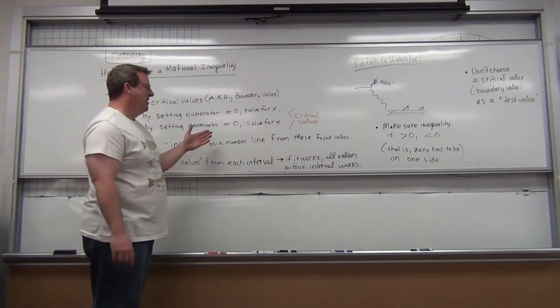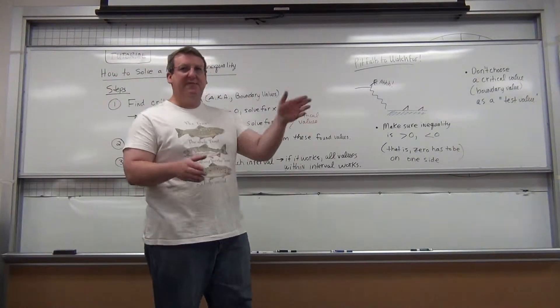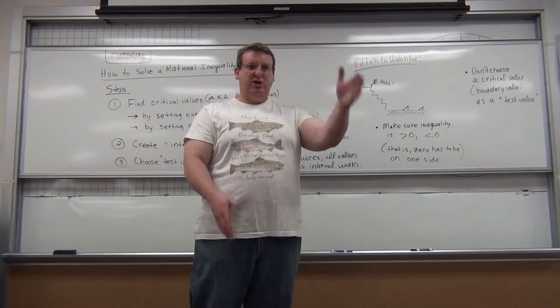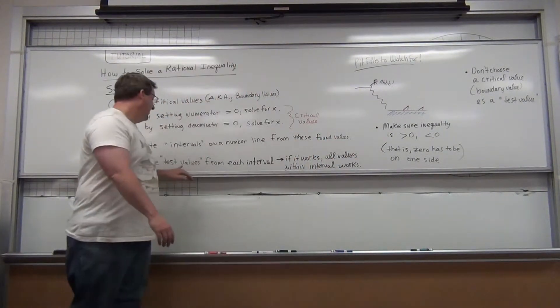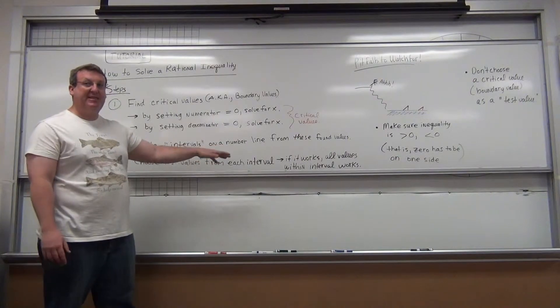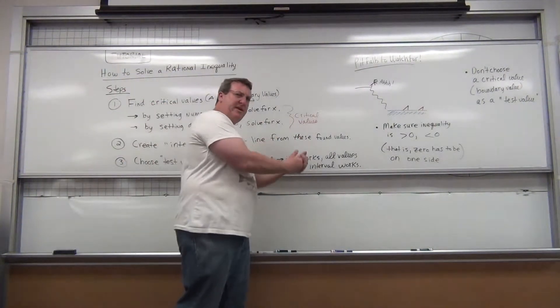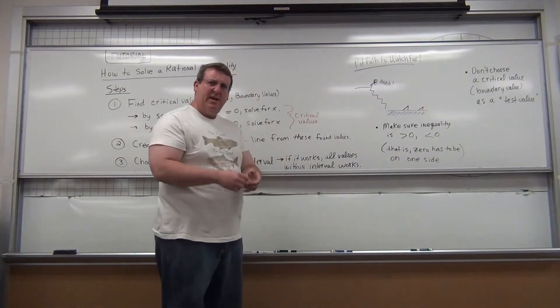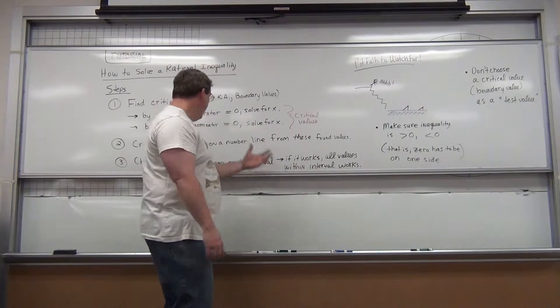Create intervals on a number line from these critical values. So once you identify the critical values, you get a number line, chop it at those points. Then choose test values from each interval. These test values are like test pilots. You put them into the actual inequality they give you, test it out to see if it works and makes it true. So those are the three steps.